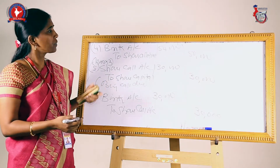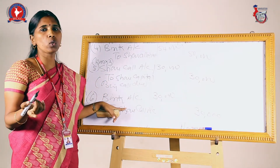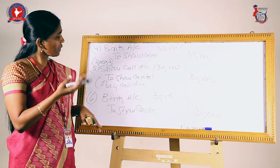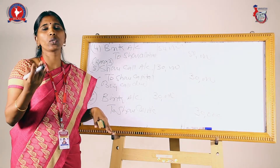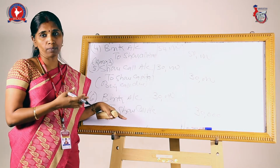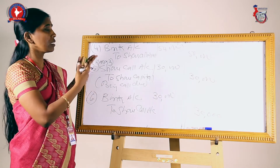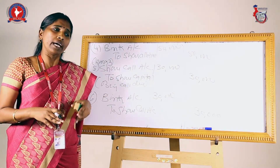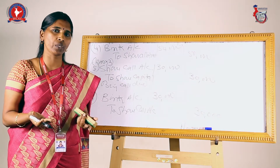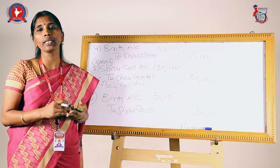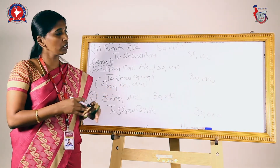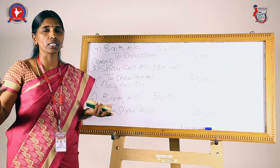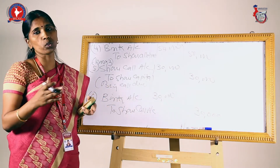Depending on the case the sums may differ. When the company is making the call, some shareholders may not pay the call money on time — that is called calls in arrears. After giving a notice, if the shareholder still does not pay, the shares will get cancelled — that is called forfeiture of shares. When forfeiture happens the share capital of the company reduces. The forfeited shares are then reissued to the public. Forfeiture and reissue can be at par, premium, or discount. Any balance remaining in the share forfeiture account should be transferred to the capital reserve account.